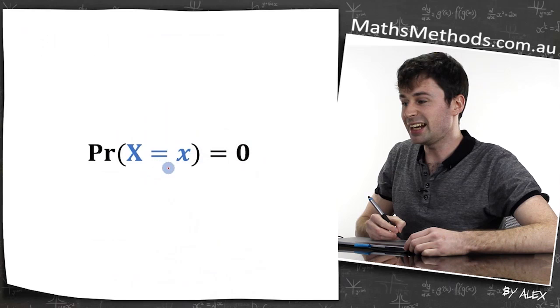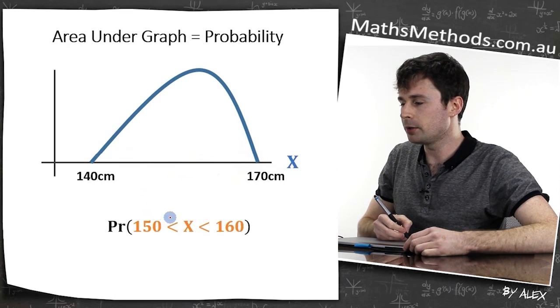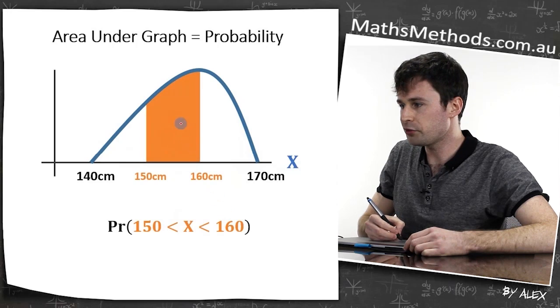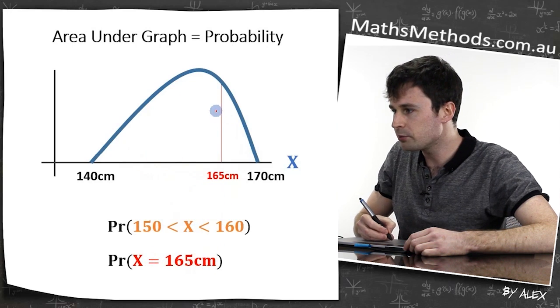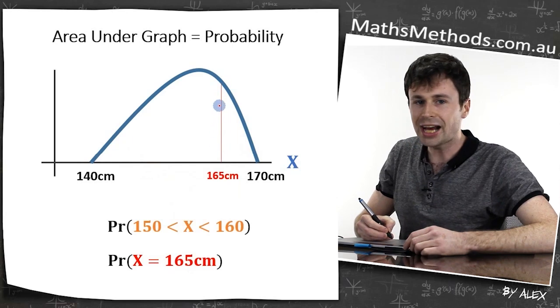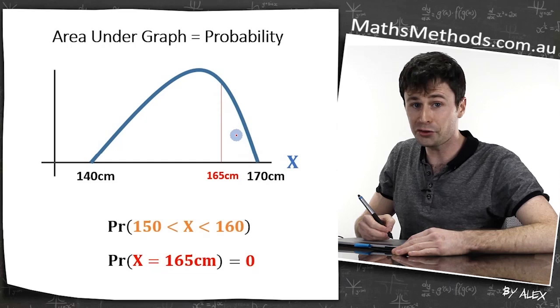Now the probability that X equals a certain number actually equals zero. We know that the probability between 150 to 160 would be this area, but the probability that X equals 165 would be this line here, which actually has no area at all. And since there's no area, the probability of it happening is zero.